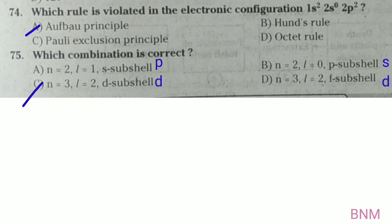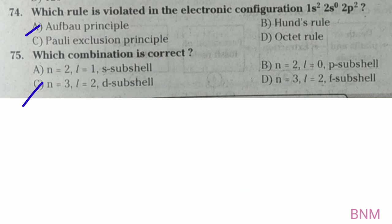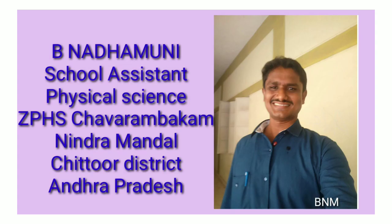Next, option D: n=3, l=2 — d orbital. But if it were an f sub-cell, that would be a wrong statement. Thank you very much for watching this video. Please subscribe to our channel, like this video, and please share this video.